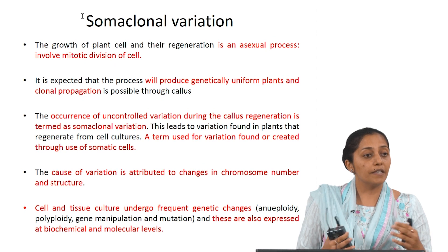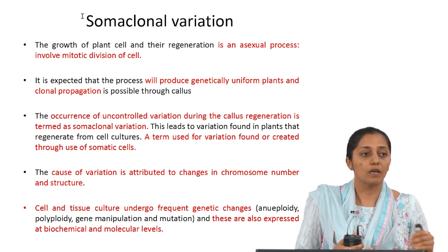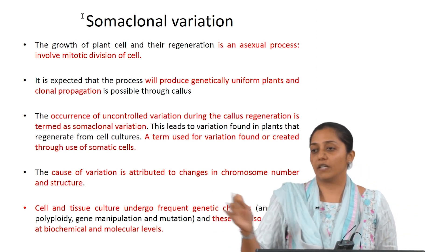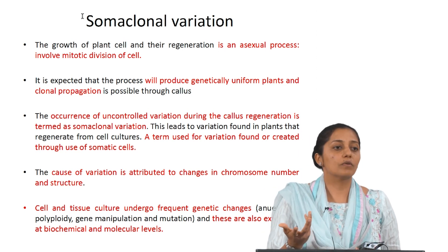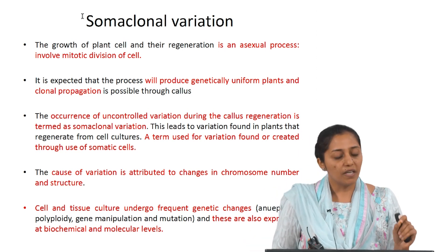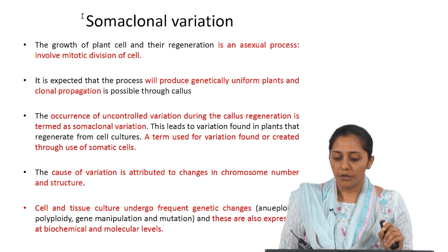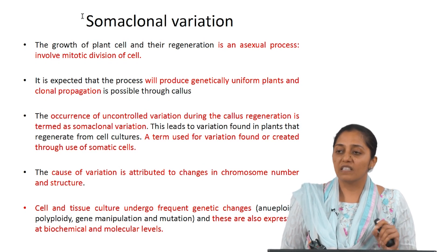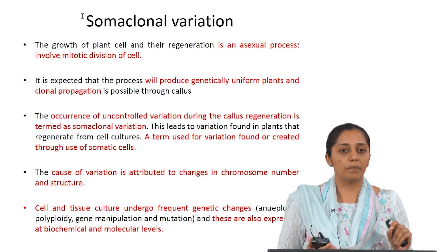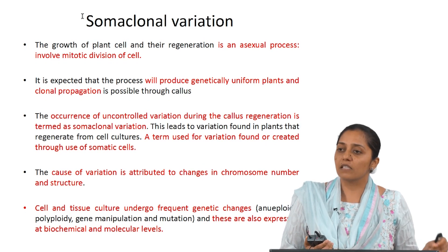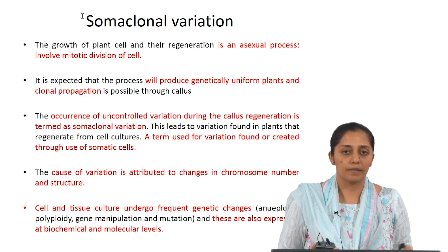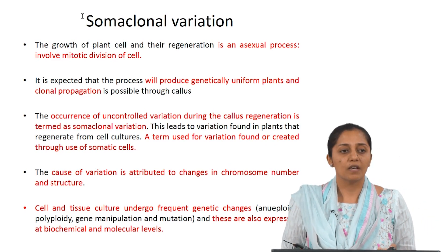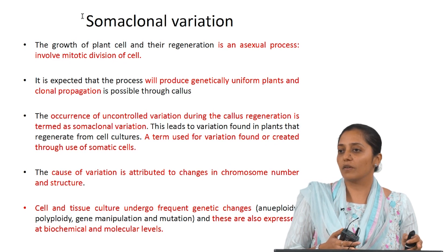These are different kinds of variations which can happen because of somaclonal variation. If the objective is to do clonal propagation of the plant, then somaclonal variation is a demerit. The occurrence of uncontrolled variation during callus regeneration is termed somaclonal variation. This leads to variation found in plant regenerates when using cells or callus in in vitro cultures. Because we are using somatic cells generally in in vitro cultures, hence the term somaclonal variation.